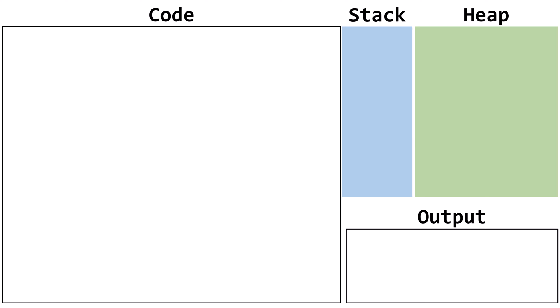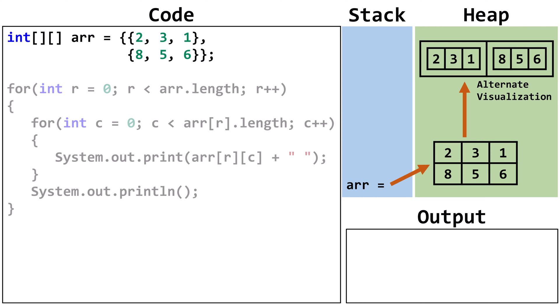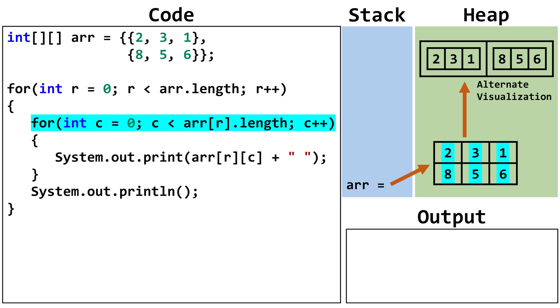In this Java tutorial, we're going to learn how to traverse a two-dimensional array. We declare a two-dimensional array of type int. The name of the variable is arr, and we've hard-coded the values. The outer for loop traverses each of the rows in the 2D array, and the inner for loop traverses each column in a given row. In Java, 2D arrays are row major. The first number specifies the row, and the second number specifies the column.